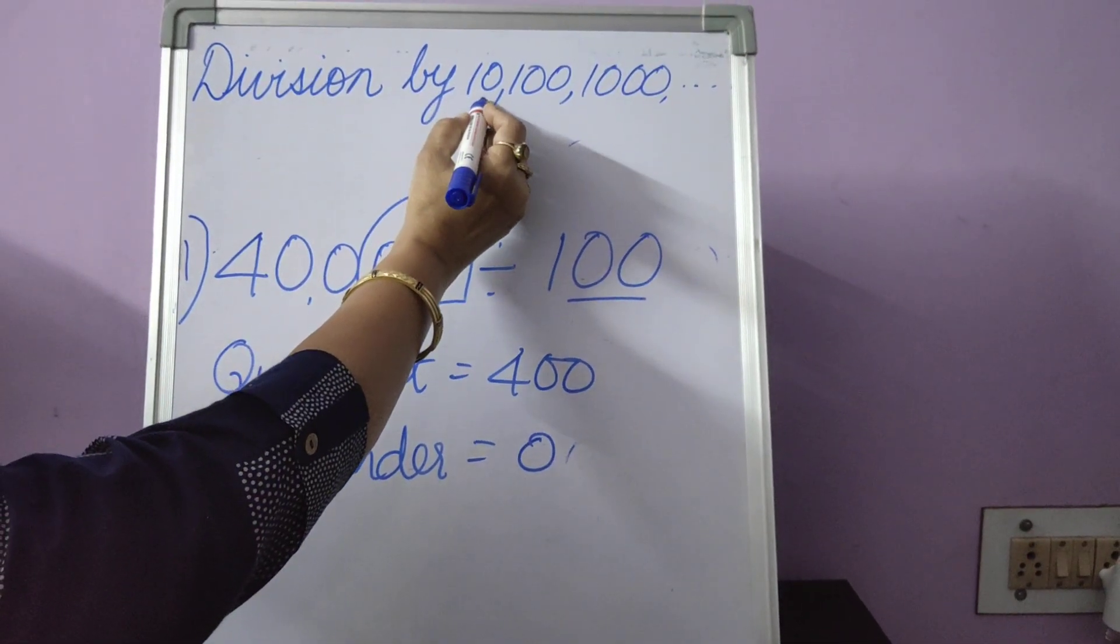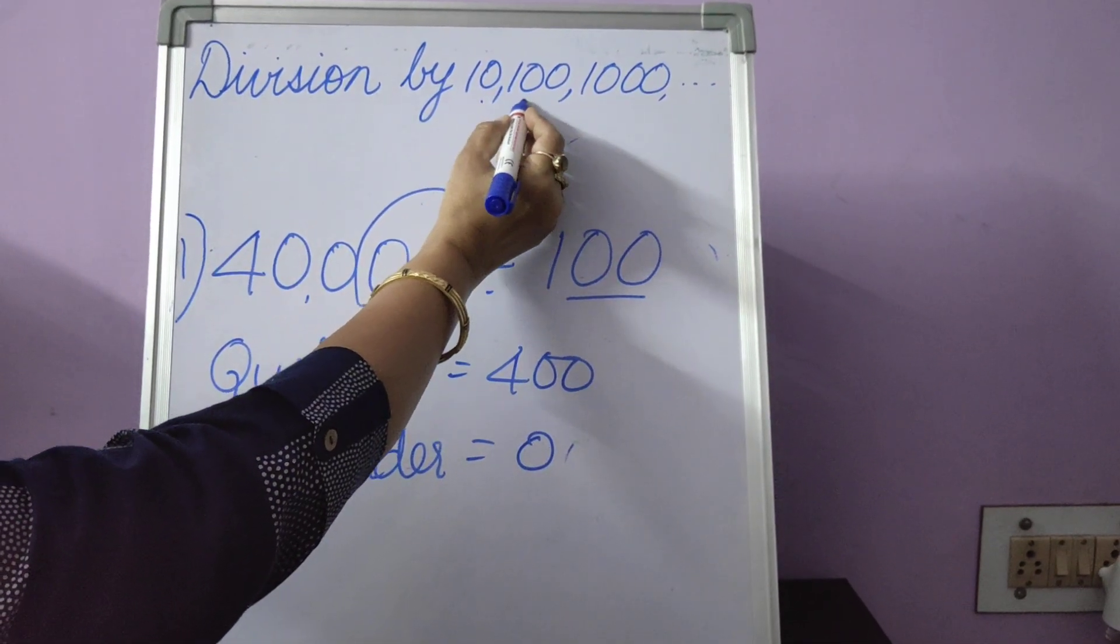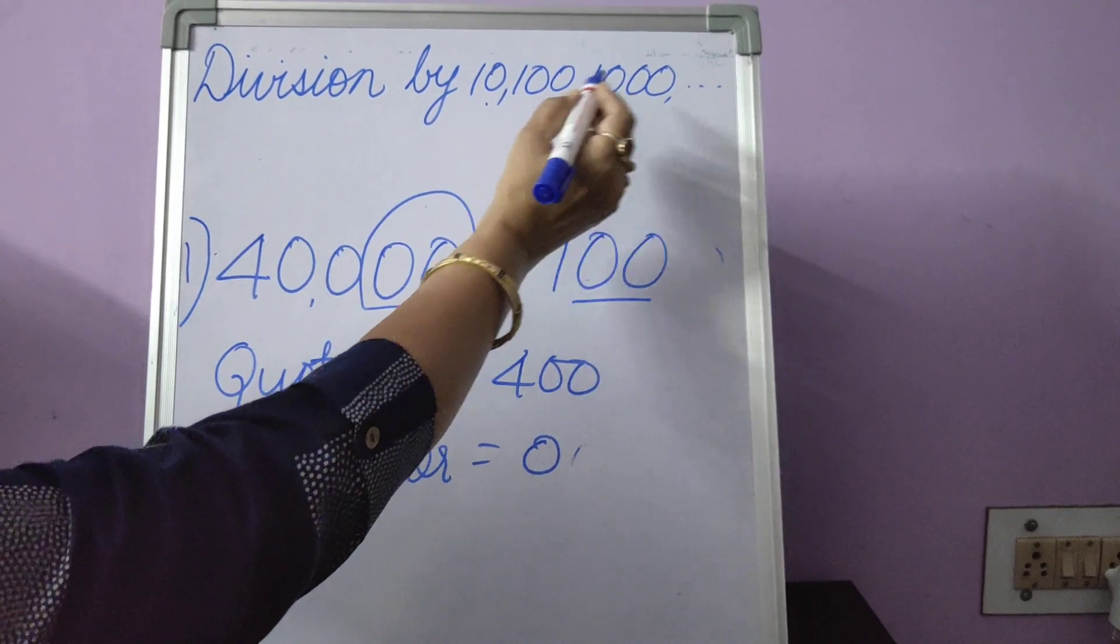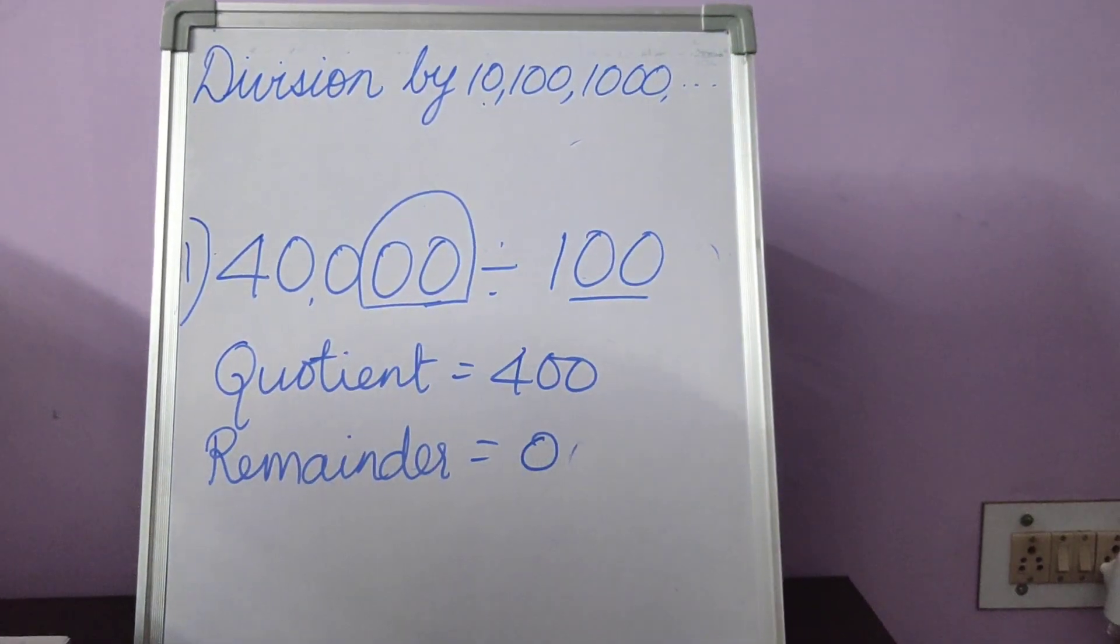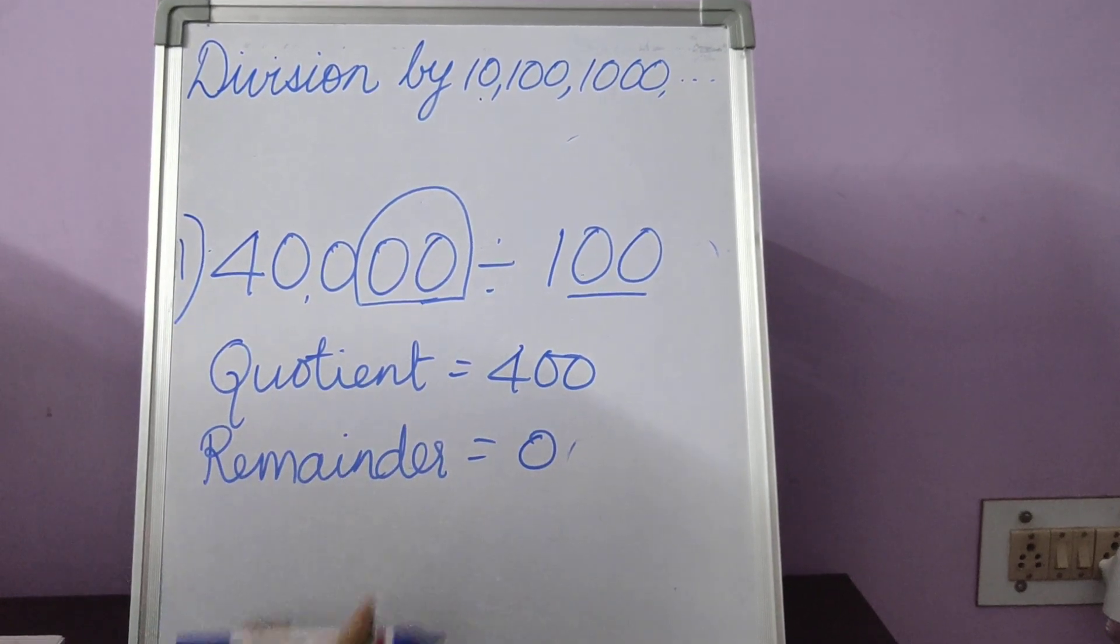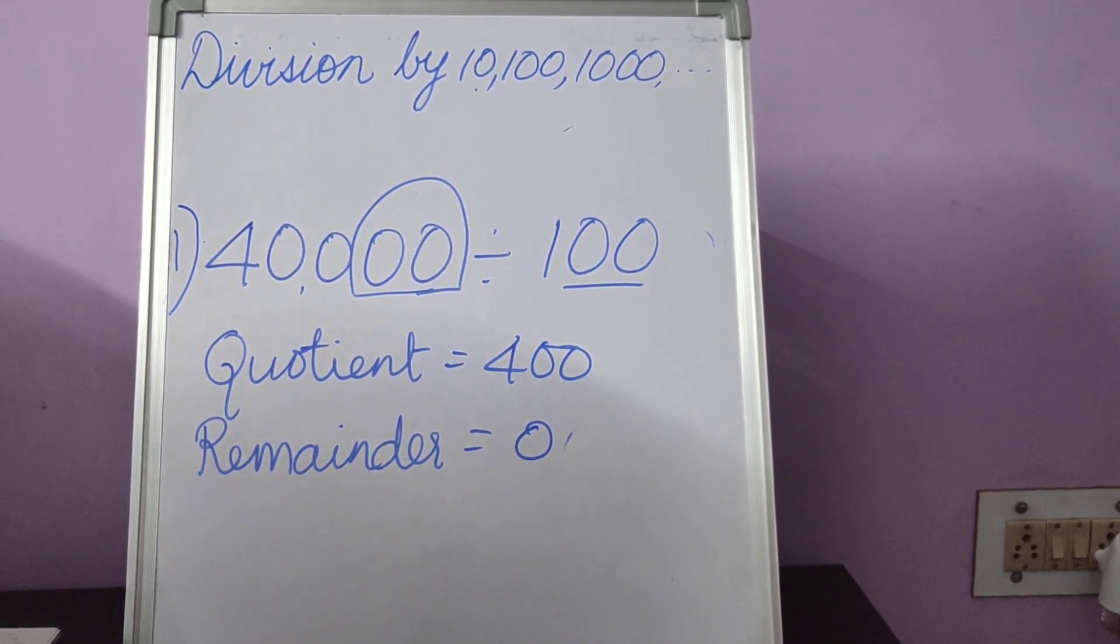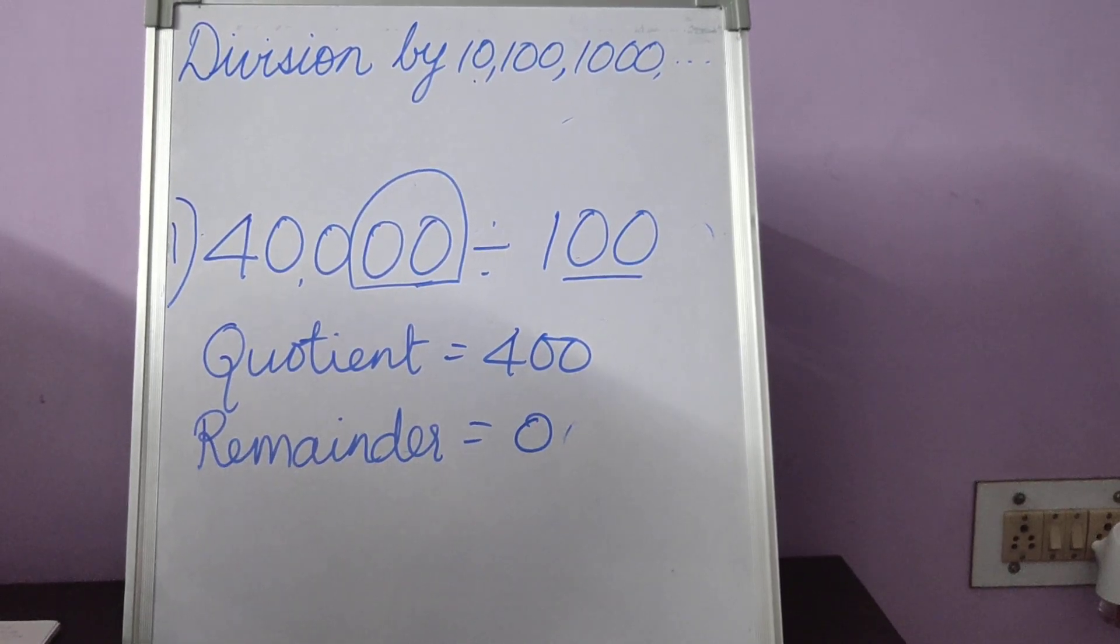So just remember, when you divide by 10, just count one place. When you divide by 100, count two places. And when you divide by 1000, count three places and so on and on. So that's it children. Division by 10, 100 and 1000. Have a good day.